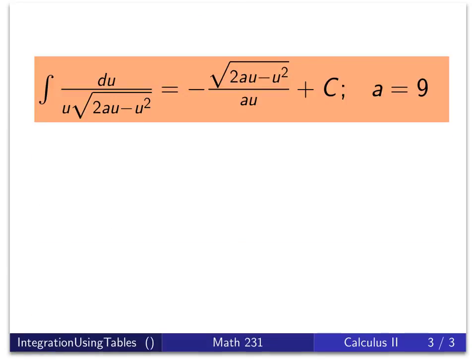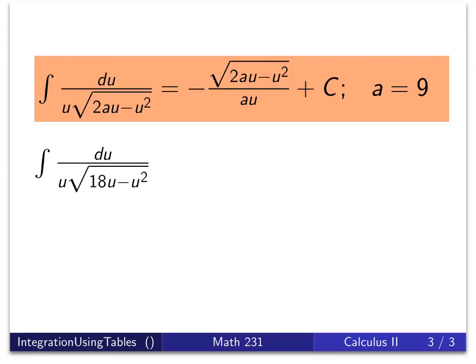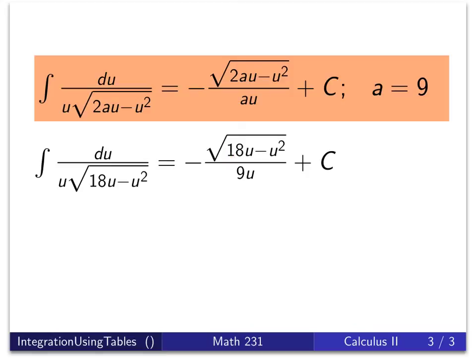So here's where we are at this point. Here is our integral. And so it's going to be 2a times u. So 18u minus u squared minus u squared. A times u in the denominator. 9u in the denominator.